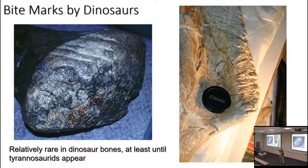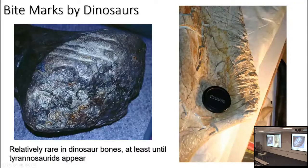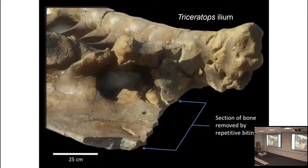Bite forces — yes. Tyrannosaurids have stronger bite forces and these thickened, encrassate teeth that are better built for smashing into bone. Here, for instance, this is the deltopectoral crest of a Saurolophus, a big hadrosaur, and it's got bite marks — actually a variety of styles of bite marks, probably from the same individual Tyrannosaurus using different types of teeth in different parts of feeding. They have those incisor-like front teeth and the big crunching side teeth. Here, this specimen of Triceratops shows scalloping in the bone, probably from multiple bites by a Tyrannosaurus.